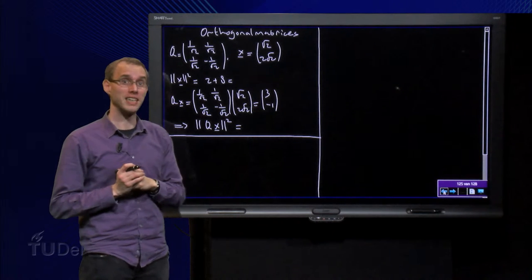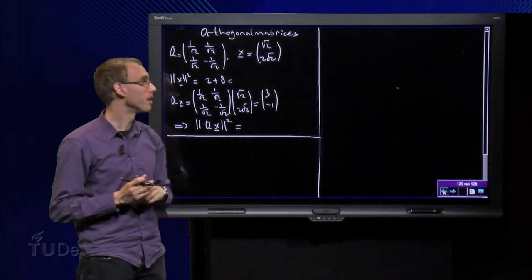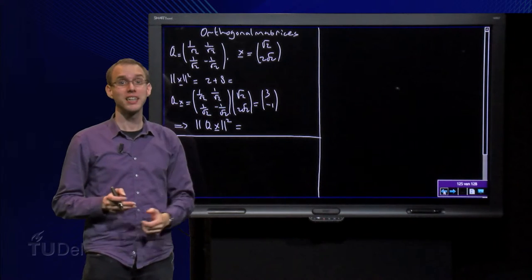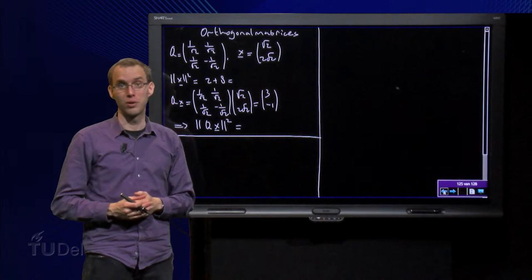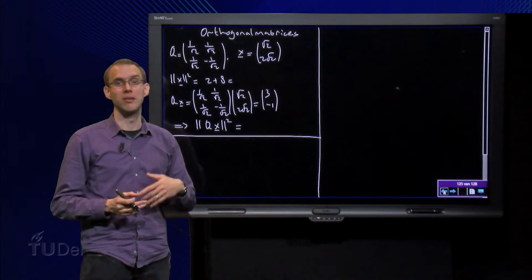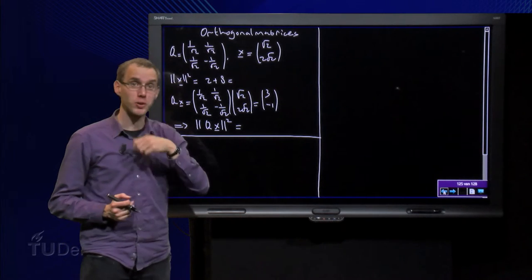Suppose we take our matrix Q, the same matrix as before. It is a square matrix, it has orthogonal columns, the length of the columns is 1, so we have orthonormal columns. So Q is an orthogonal matrix.